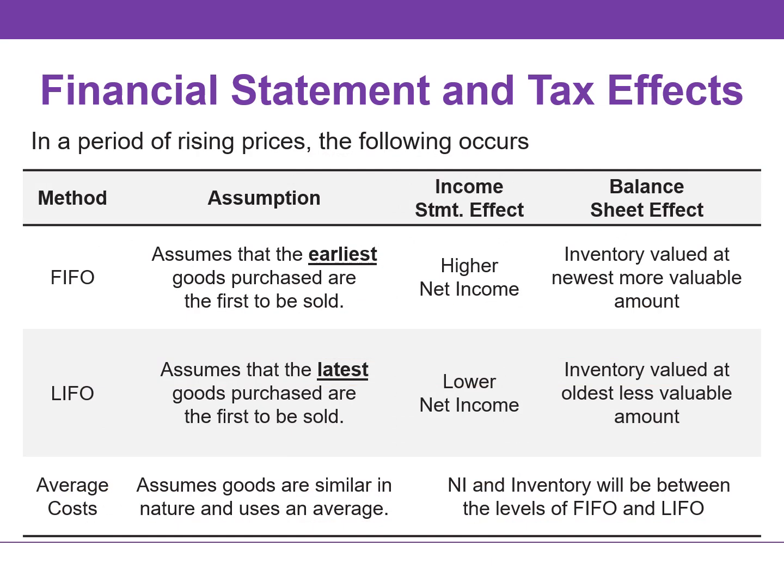In periods of rising prices, FIFO reports the highest net income, LIFO the lowest, and average cost falls in the middle. If prices are falling, the results from the use of FIFO and LIFO are reversed.